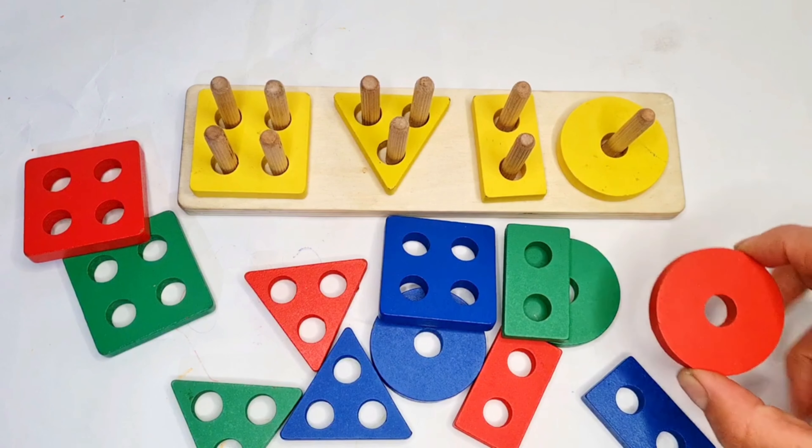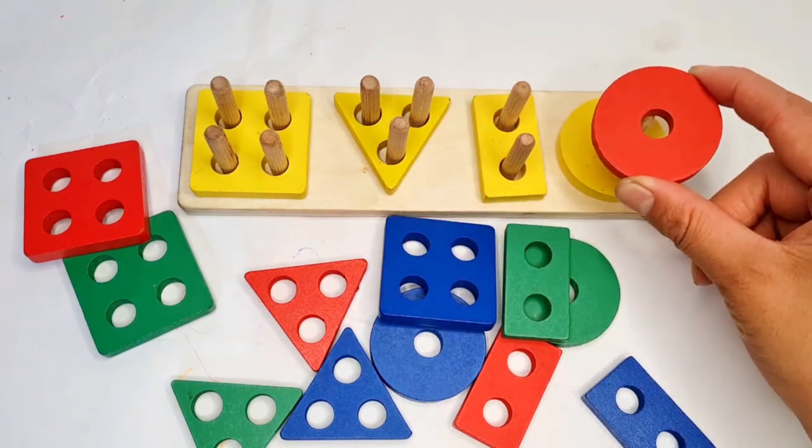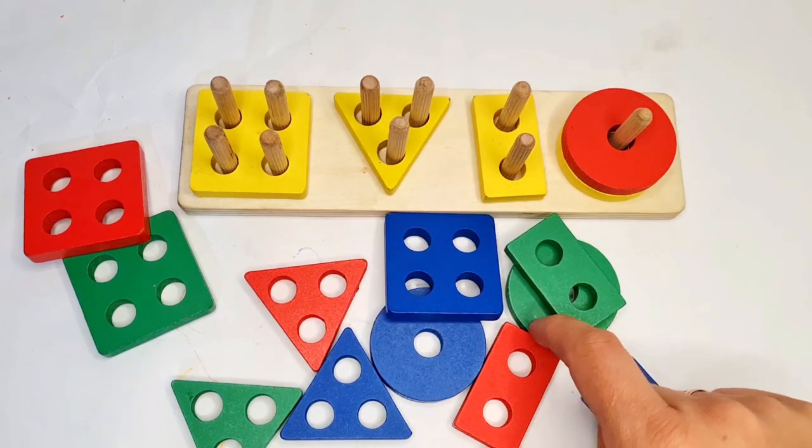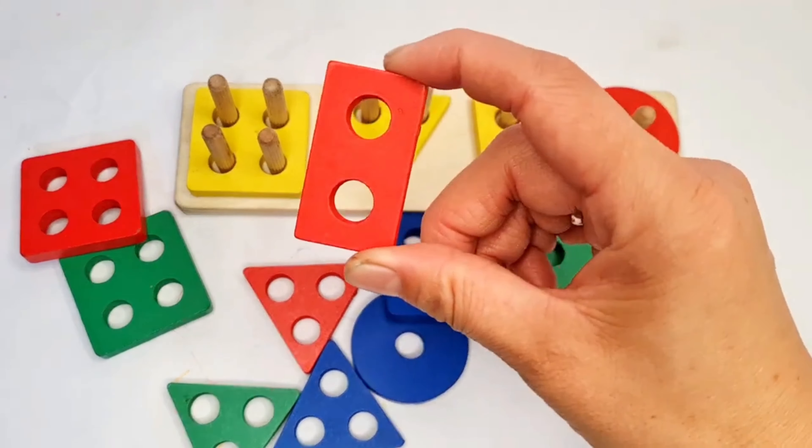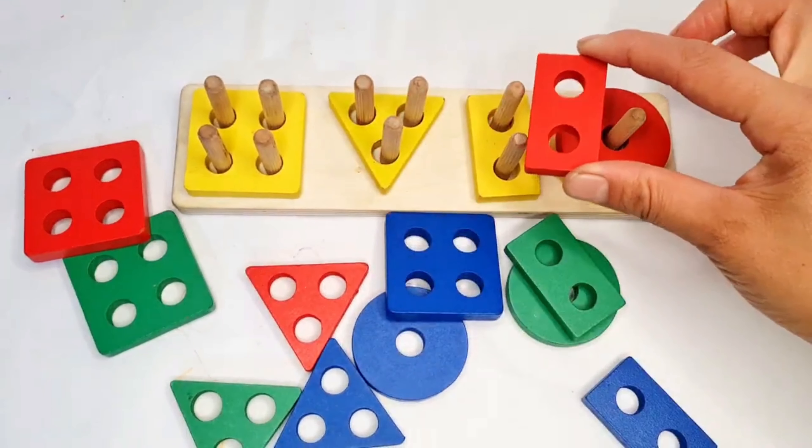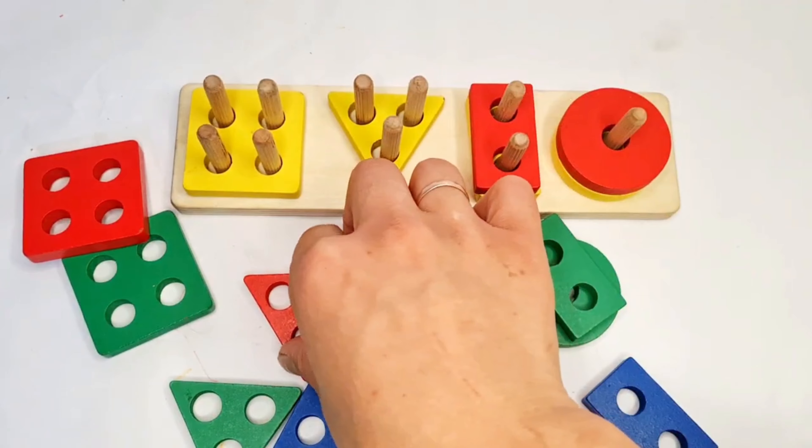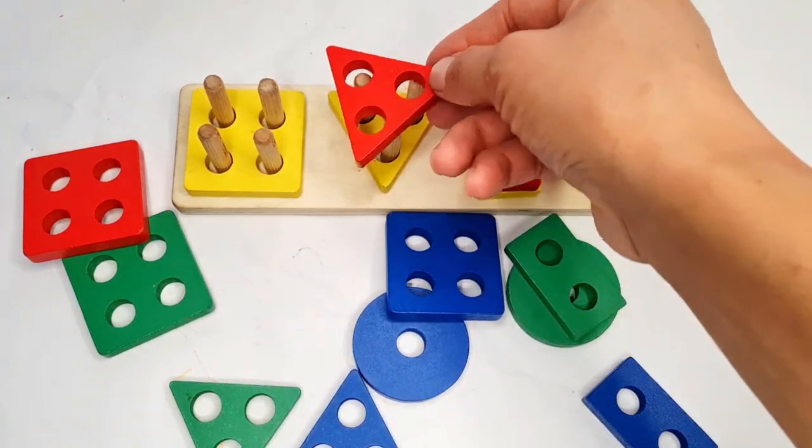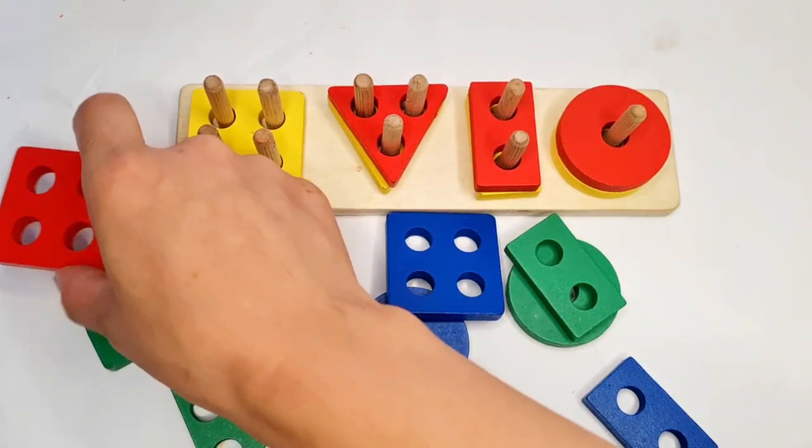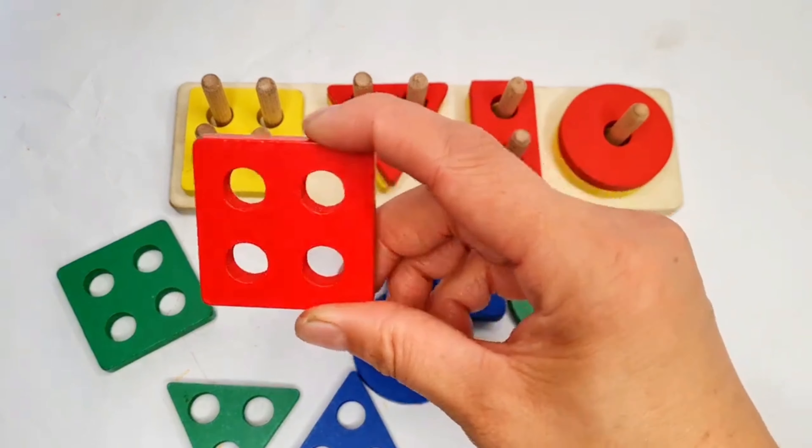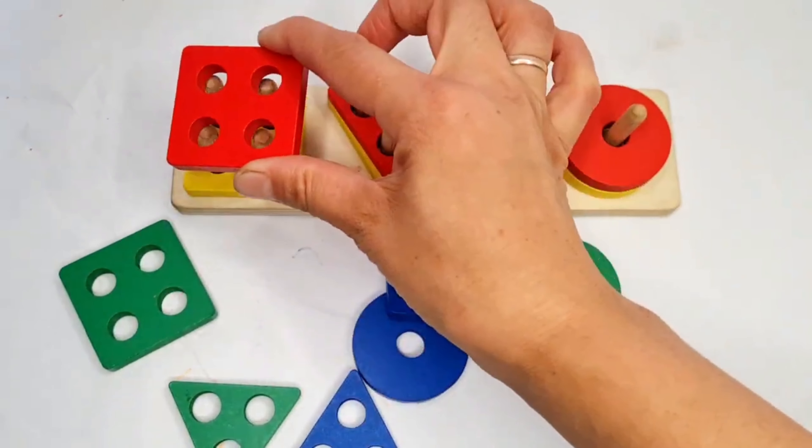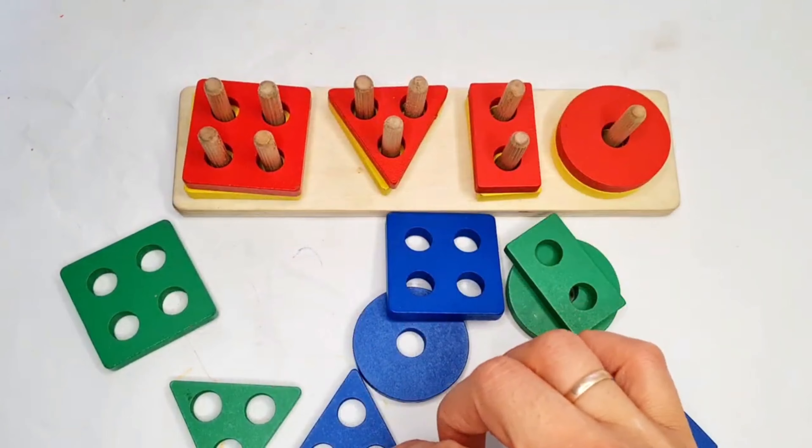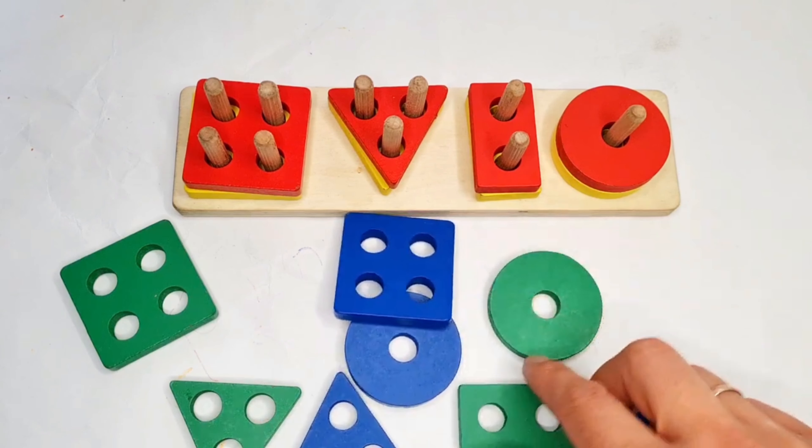Next. Our shapes. Red circle. Red rectangle. Red triangle. Red square. Next.